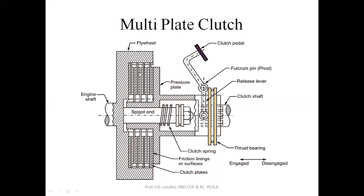The clutch plate is no longer in contact with the flywheel, allowing a gear position change easily without any thrust or knocking noise. Afterwards, when you have changed the gear position, you slowly release the clutch pedal so that the clutch plates gradually re-engage with the flywheel or driving plate, and power transmission becomes smooth through the clutch shaft.